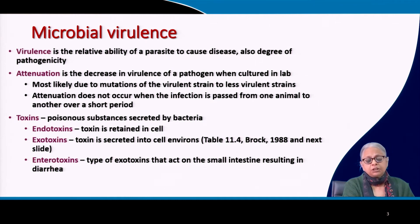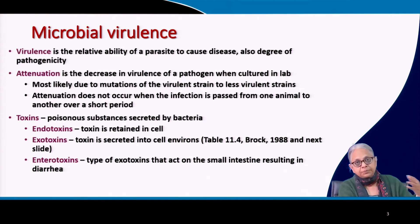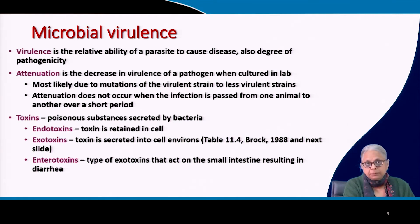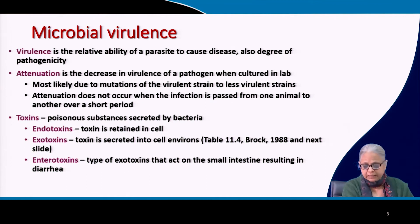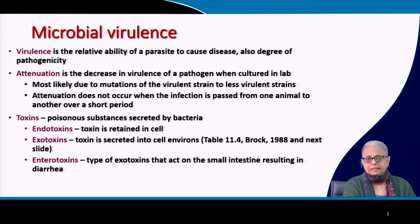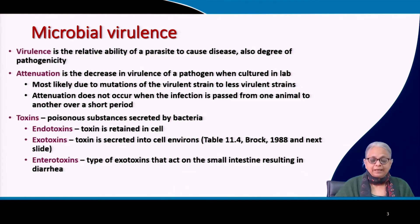The second issue is attenuation, or the decrease in virulence of the pathogen when it is cultured in the laboratory. For example, if you take a sample from an infected person and culture it in the lab and perhaps reinfect another person, there is some likelihood that there will be decreased virulence of that pathogen. We are not going to go into too much detail — this remains the domain of medical experts. We just want to be aware of some fundamental principles of microbe-human interactions, diseases and their control. Attenuation is most likely because of mutations that happen to the virulent strain and make it less virulent.